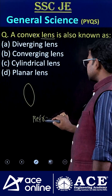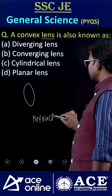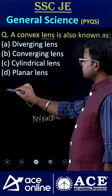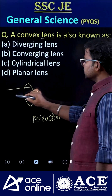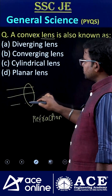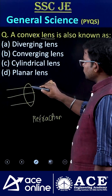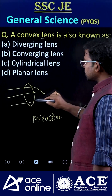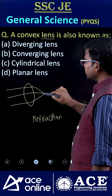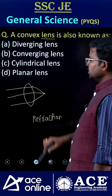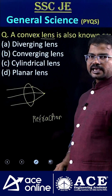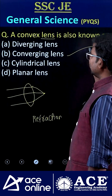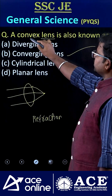Refraction is the name of the phenomenon. When light is passed through a convex lens, almost all the rays merge at one particular point, so this is called converging.